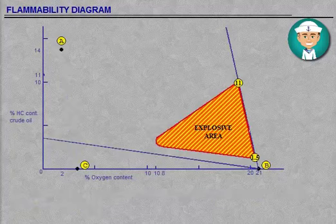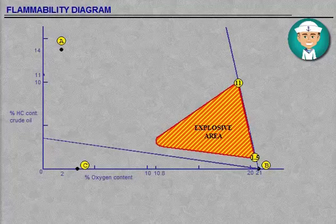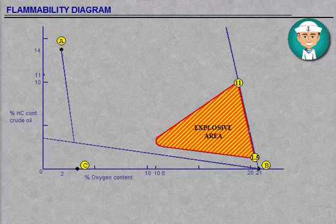Continue to measure the tank atmosphere. After some time, this will result in the chosen line being crossed. In this example, the reading is hydrocarbon equals 2.8% by volume and oxygen equals 2.8% by volume, point D.